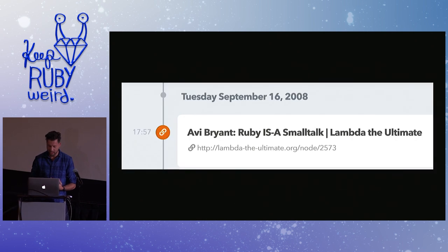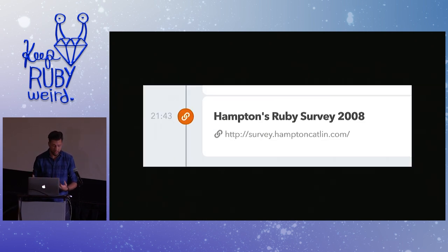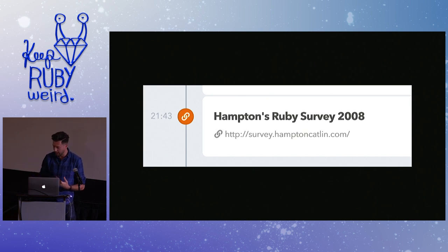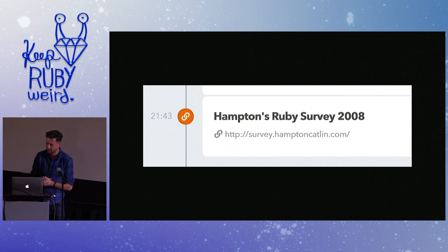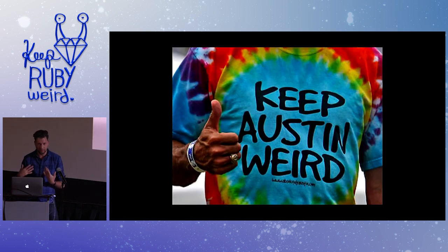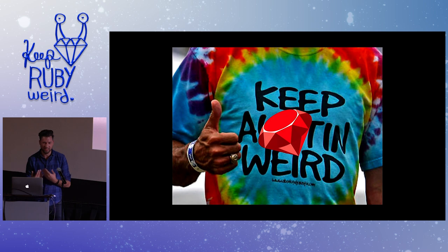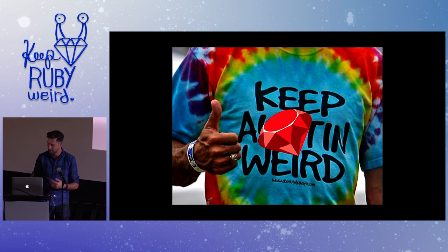Around that time I started hearing about Ruby on Rails. Here's a chat log from 2005 where I'm talking to my friend Andre about it — 'gotta check out this cool Ruby on Rails.' It was a big deal for me. I discovered Ruby on Rails, programming became fun again, and it had a big impact. There were really cool ideas, a really good community, and Ruby kind of brought me back into tech. Part of it was just the weird projects in the Ruby community and the culture of people who weren't in it just for the technical aspects.